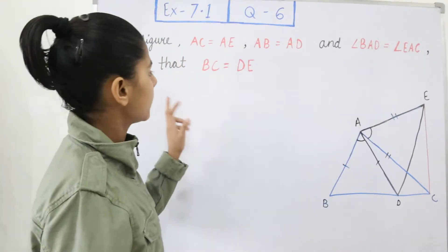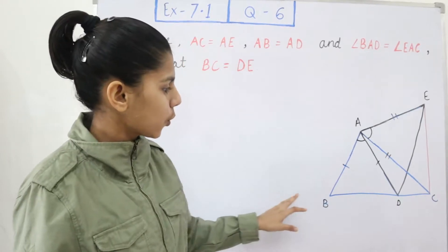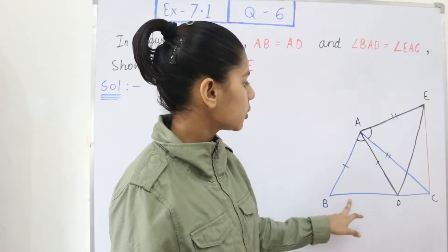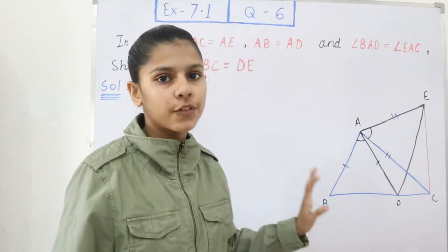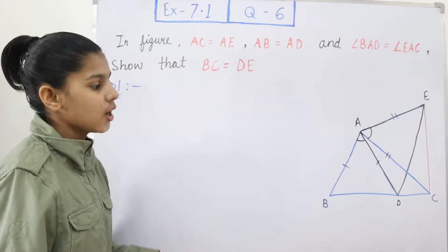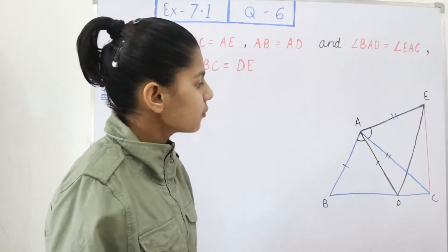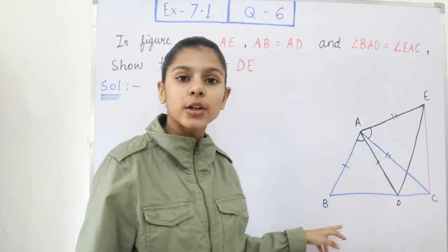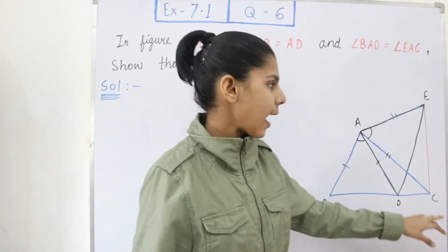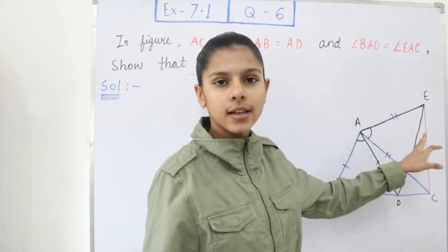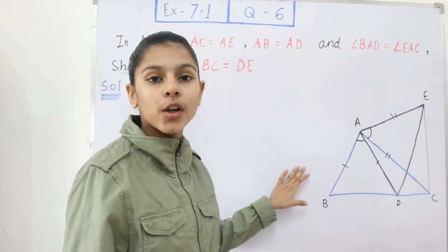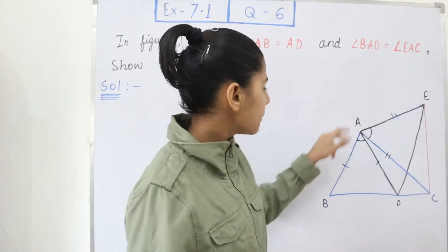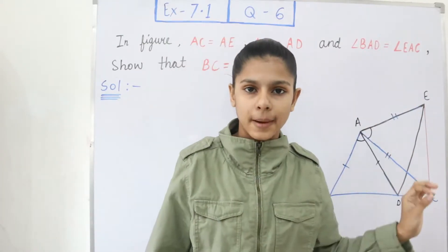We have to show that BC is equal to DE — this line segment is equal to this line segment. To show them equal, we first need to prove two triangles congruent, because BC is part of triangle ABC and DE is part of triangle ADE, which I have marked in black color. So we need to prove triangle ABC and triangle ADE congruent.